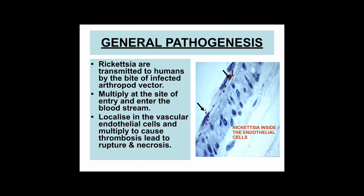Moving on to general pathogenesis, rickettsia are transmitted to humans by the bite of an infected arthropod vector. They multiply at the site of entry and enter the bloodstream. Being obligate intracellular parasites, they grow and multiply in the nuclear or vascular endothelial cells lining the arterioles and venules. This therefore causes vasculitis and an increase in vessel permeability.